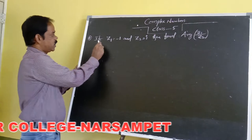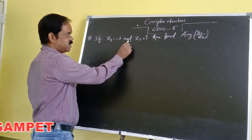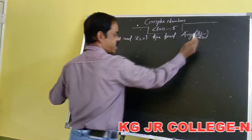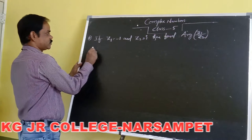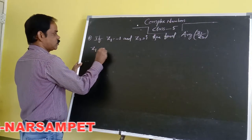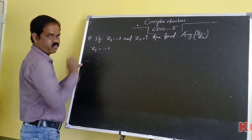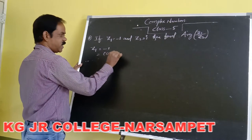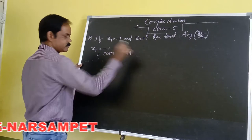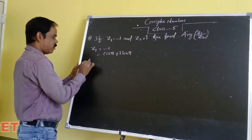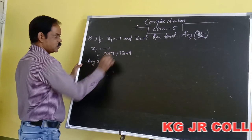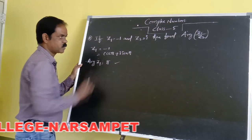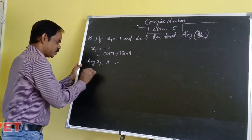Second problem: if Z1 is equal to minus 1 and Z2 is equal to i, find the argument of Z1 by Z2. For Z1 equal to minus 1, the polar form is cos pi plus i into sin pi. So the argument of Z1 is equal to pi.